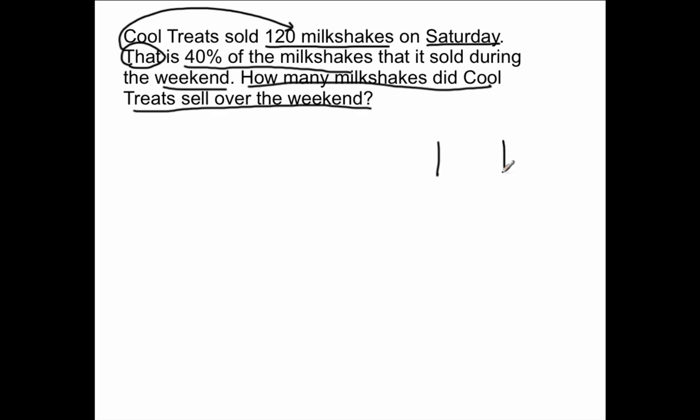So we know what the information is in our table. We know that 120 is part of the whole milkshakes that have been sold. So therefore the 120 is the part. We're trying to find what the whole is. And we know that our percent or our rate is 40 percent. So we're going to make a table. And it's important when you're talking about percent to not just say 40. 40 represents 40 holes. 40 percent represents 40 hundredths, which is less than one.